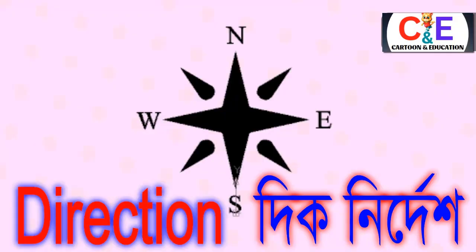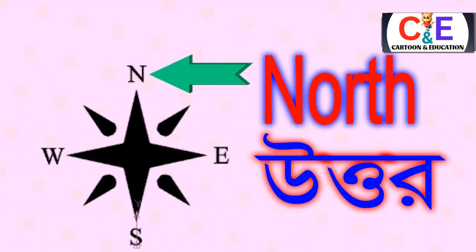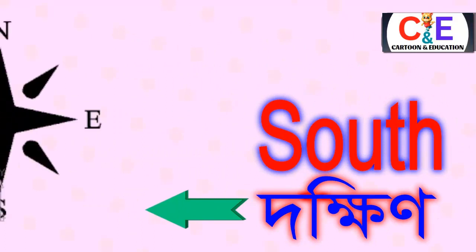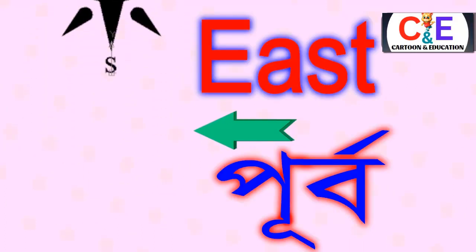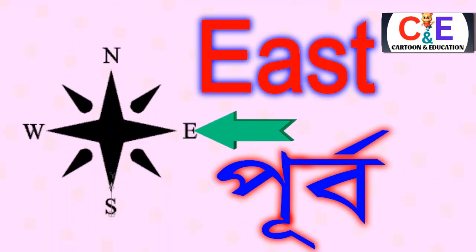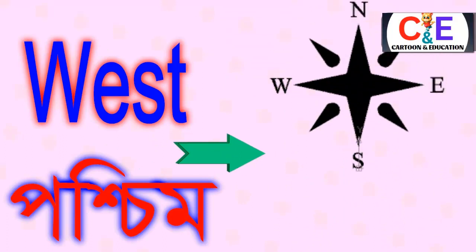Direction — Dignit Desh. North — Uttor. South — Dokkin. East — Purbo. West — Posthum.